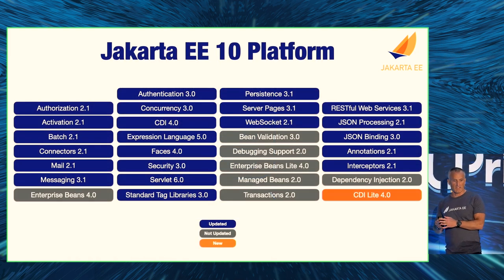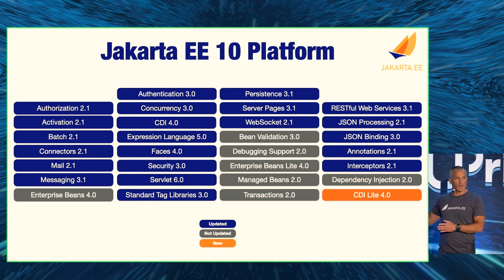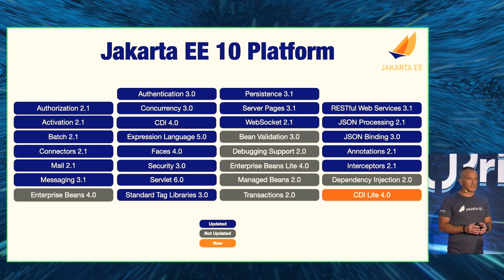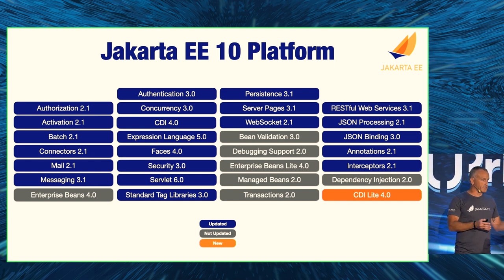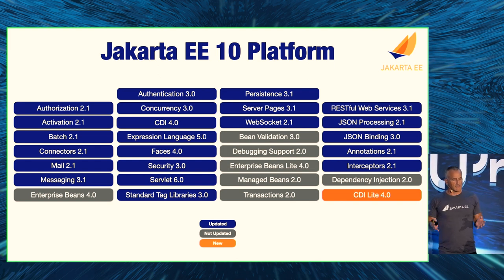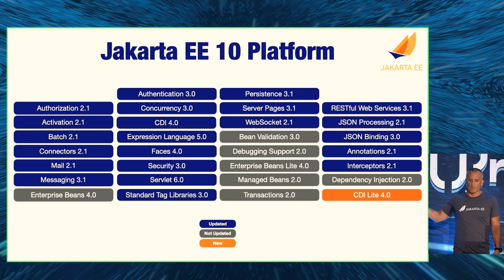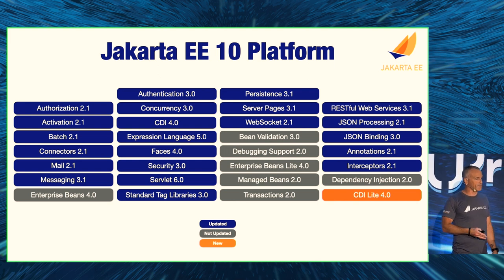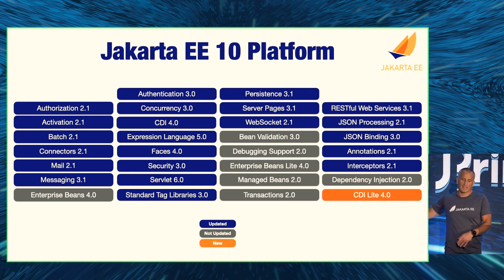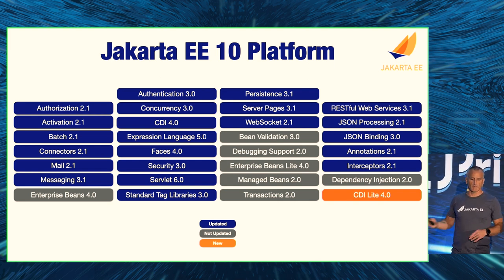Jakarta 10 contains a lot of specifications. You can see all the ones updated in Jakarta 10 highlighted in blue. The ones with a dot-one after the version number are minor updates; the ones with a dot-zero are major updates, which may have some backwards incompatibility. The gray ones are stable and weren't updated. There's also an orange one in the corner: CDI Lite, which is part of CDI but is new for Jakarta 10.